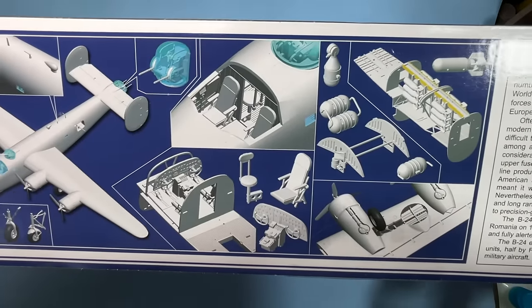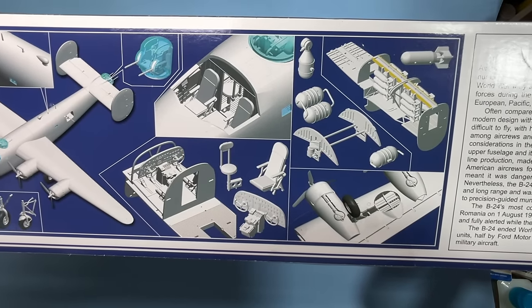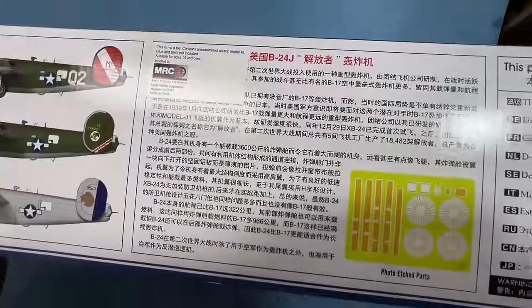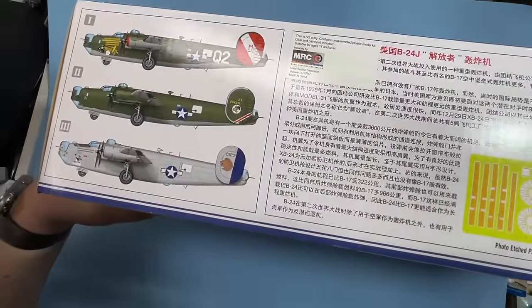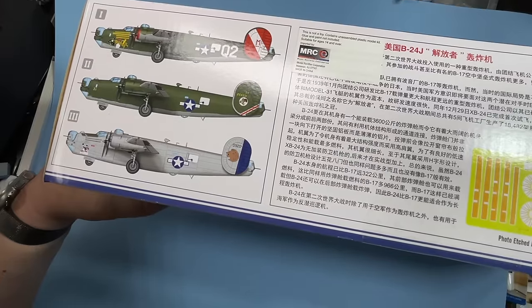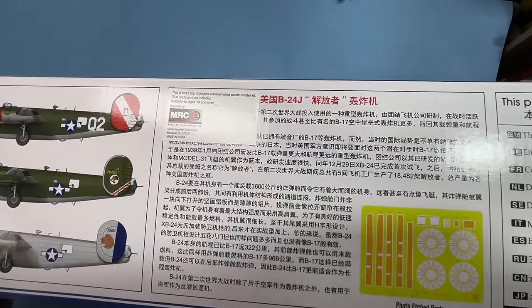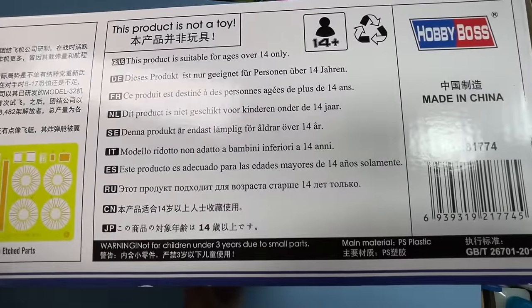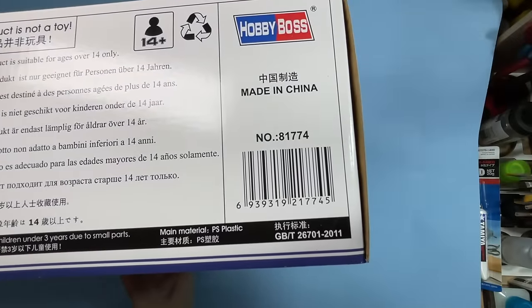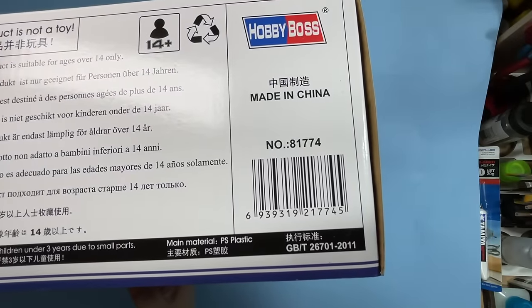Kit number 81774. Length of 430.3 millimeters, wingspan 694.6. Here you've got a little bit about the bomber, some CAD drawings. On the other side you have three marking options and the kit number.